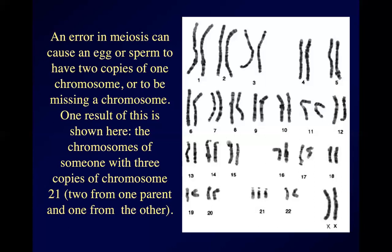That's just — like I said — meiosis is very, very good, but it's not perfect. Every so often, this is just one of those things that happens. You will very rarely see babies born with three copies of chromosome 13 or three copies of chromosome 18. Usually they don't live very long after birth — maybe weeks, maybe months. And most of the time, fertilized eggs with three copies of a chromosome never produce a baby at all.